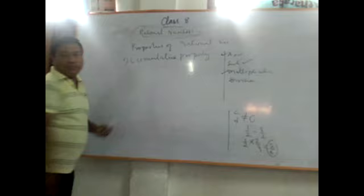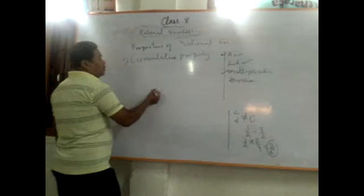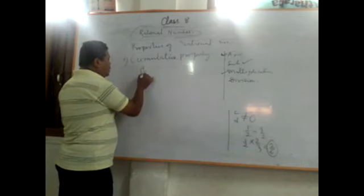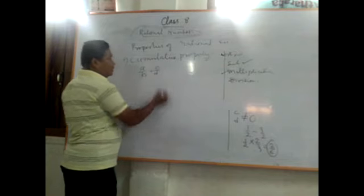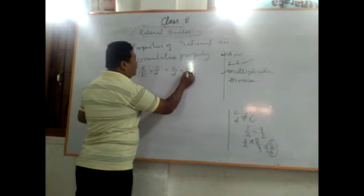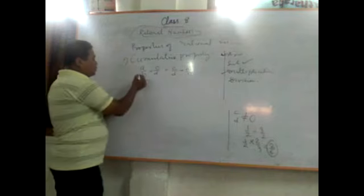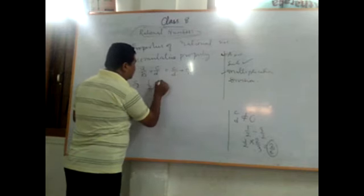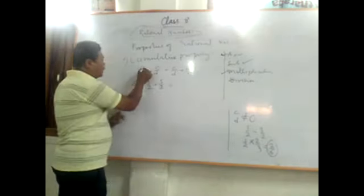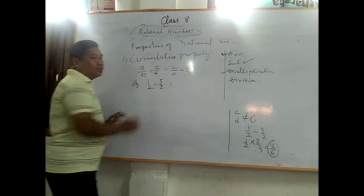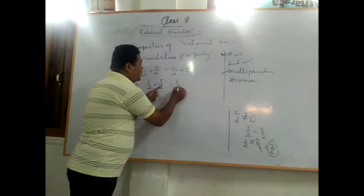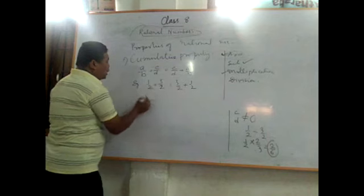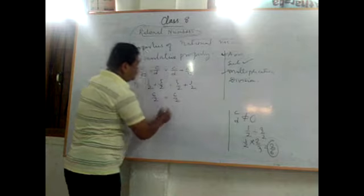Commutative property on addition: a by b plus c by d equals c by d plus a by b. For example, 1 by 2 plus 5 by 2 equals 5 by 2 plus 1 by 2 — both give 6 by 2. So commutative property on addition is applicable.